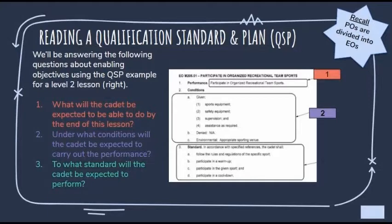The second question is: under what conditions will the cadet be expected to carry out the performance? This is located under conditions, which is found under performance. In this specific lesson — participate in organized recreational team sports — they will need equipment for both safety and sports purposes, supervision, and any assistance as required. The environmental condition is that they need to find the appropriate sporting venue, such as a gymnasium, a field, etc., depending on what the sport is.